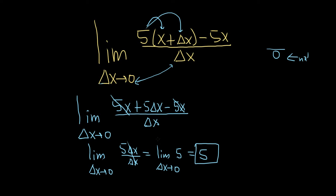You can also do this intuitively, right? This piece here, you could say, what happens to 5 when delta x gets really close to 0? Nothing. It's still 5.